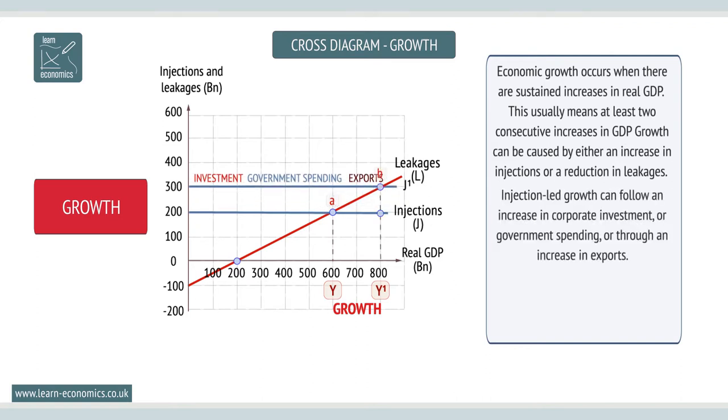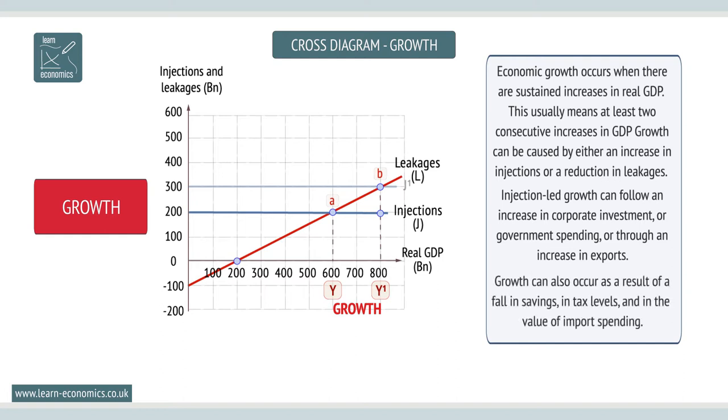Injection-led growth can follow an increase in corporate investment or government spending or through an increase in exports. Growth can also occur as a result of a fall in savings, in tax levels, and in the value of import spending.